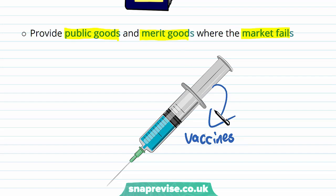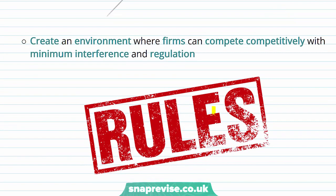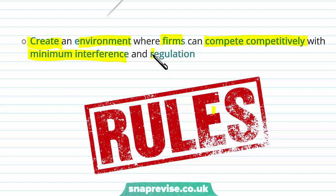That's where the government steps in. The government is also going to create an environment where firms compete competitively with minimum interference and minimum regulation. The rules are relatively diminished — not to say they don't exist, but they are held to a minimum point where they do not exceed past the point at which we would say the market is no longer free.